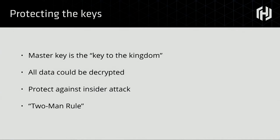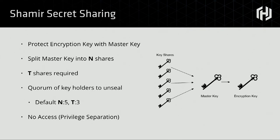You have a master key that encrypts everything else — it's the key to the kingdom, encrypting all data transitively. How do we protect that piece of information against the insider threat — people who have that key using it maliciously? The standard practice is privilege separation or two-man rules — multiple people must be involved. The algorithm Vault employs is called Shamir secret sharing. The encryption keys which protect all data at rest are never exposed to any operator. Instead, a master key wraps and protects the encryption keys. That master key itself is split into n different shares provided to operators. You have to recombine some threshold of them to rebuild the master key.